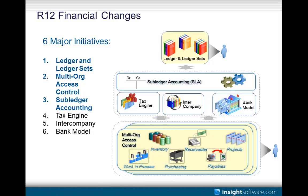The next initiative is intercompany, which has been beefed up with advanced global intercompany systems for inter and intra-company trading. If you're doing a lot of trading between departments — for example, catering cross-charging to finance for events — you can automatically create invoices and build an audit trail. Finally, the bank model is a result of the new payment engine in Release 12, allowing you to automate payment routines. Bank accounts are now held in TCA and only need to be set up once, shared across operating units.